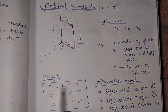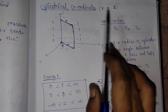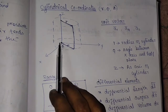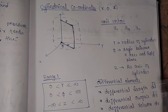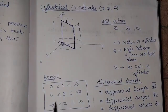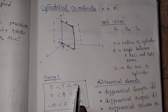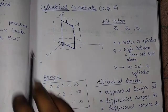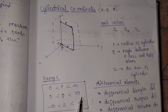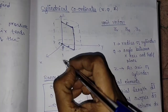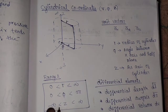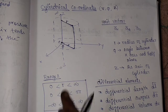Now we are going to see the range of the three variables in cylindrical coordinate system. R varies from 0 to infinity. Phi can rotate the full 360 degrees, so its range is from 0 to 360 degrees, that is 0 to 2π. And Z varies from minus infinity to plus infinity. These are the ranges of the variables R, phi, and Z.